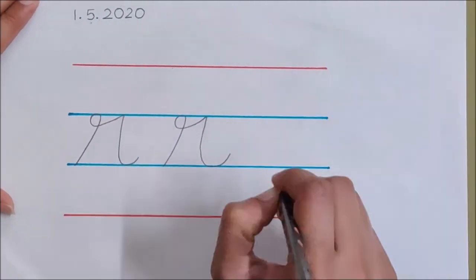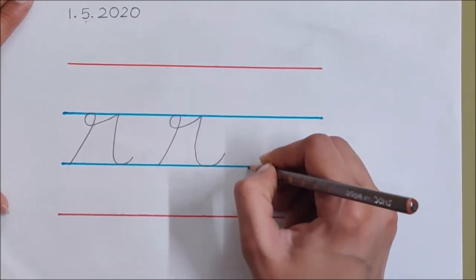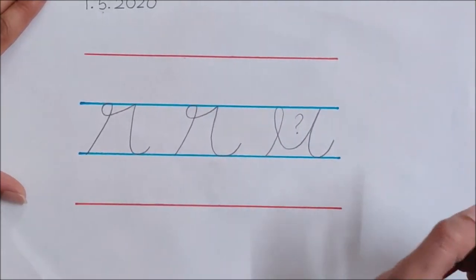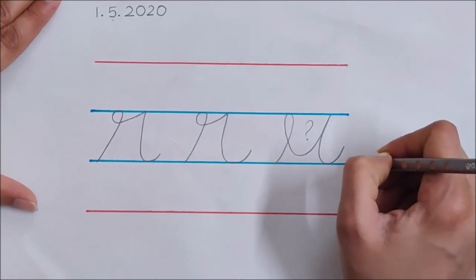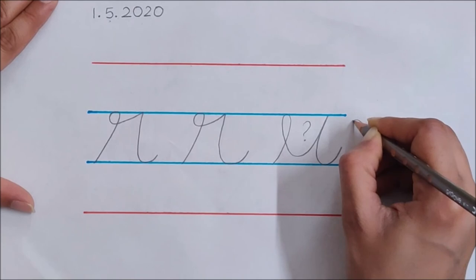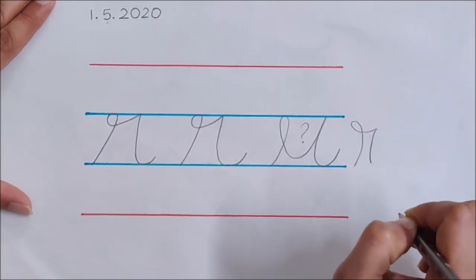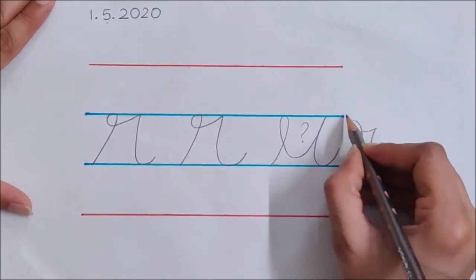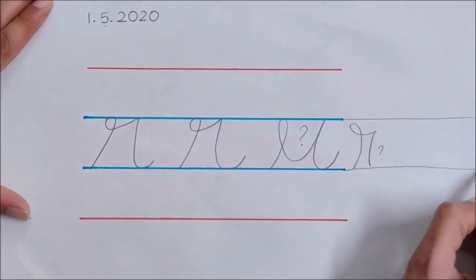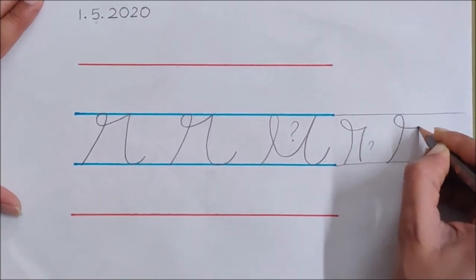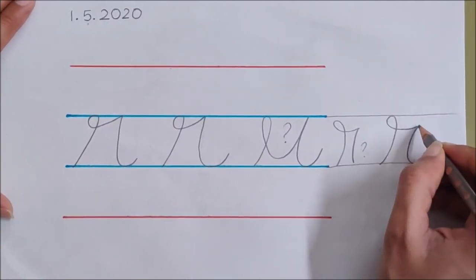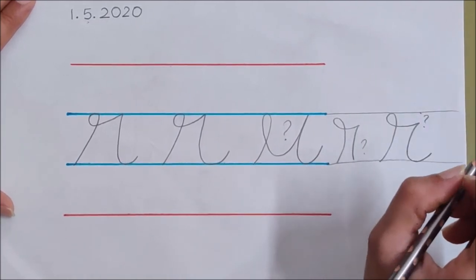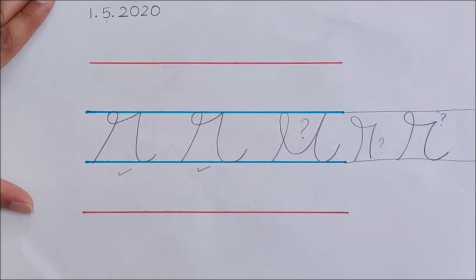This is how we write letter R. But children, do not write letter R like this. This is wrong. You have to touch the upper blue line. Okay, so this is the correct formation of letter R. Bye-bye. Take care.